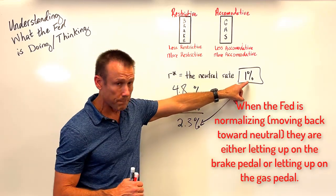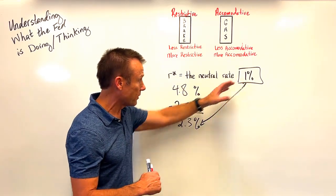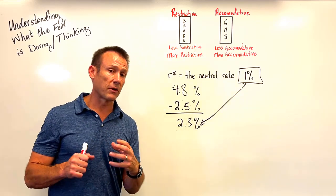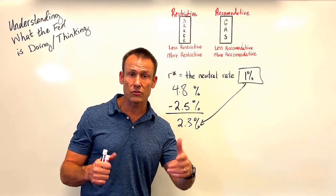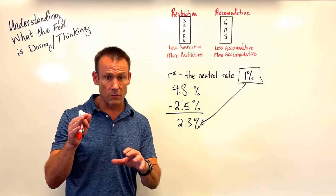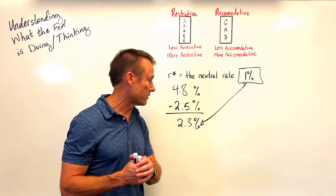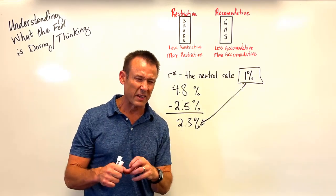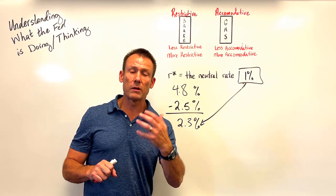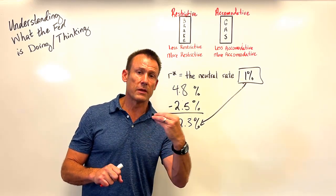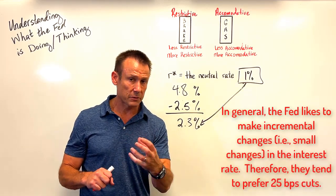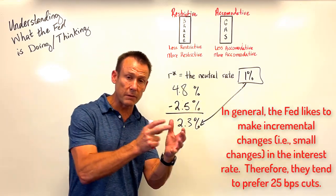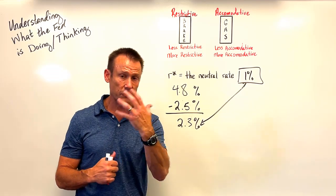Instead of being 1.8 percentage points above the neutral rate, they're now 1.3 above the neutral rate. If you listen to people out there, many say there are probably five or six or seven interest rate cuts still to come. Why five cuts? The difference between 2.3% and 1% is 1.3%, which is close to 1.25. The Fed usually cuts in 25 basis point increments. So about five more quarter-point cuts are needed to get back to neutral — that's why people say five cuts.